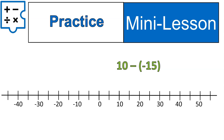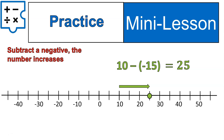I want you to try this one out — pause the recording and try starting at 10 and taking away negative 15. It's exactly what we've been doing. Welcome back. We started at 10, we took away a negative, which means we were increasing the value. So instead of going 10 minus negative 15, we would say 10 plus 15, which brings us up to 25. Remember, taking away a negative is increasing.